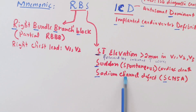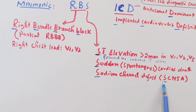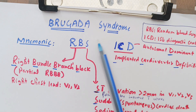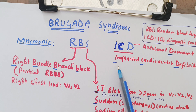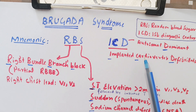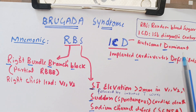This S is for sudden or spontaneous cardiac death or arrest. The next S is for sodium channel defect, which is SCN5A. Now for ICD — the treatment for Brugada syndrome is an implanted cardioverter defibrillator. And from the D, we can say it is autosomal dominant.